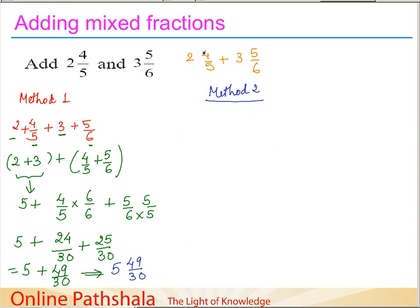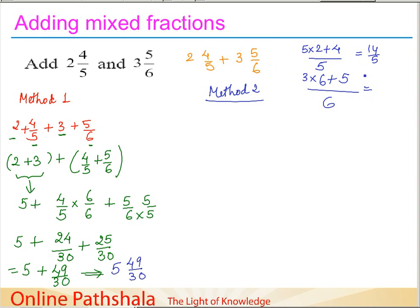In Method 2, we convert the mixed fractions to improper fractions. For 2 and 4/5: 5 times 2 plus 4, all over 5, gives 14/5. For 3 and 5/6: 6 times 3 plus 5, all over 6 — 3 times 6 is 18, and 18 plus 5 is 23 — gives 23/6. So now we have the two improper fractions 14/5 and 23/6.